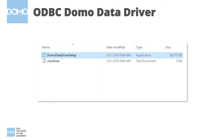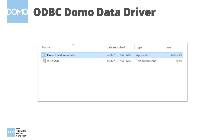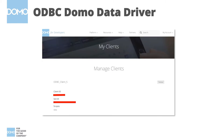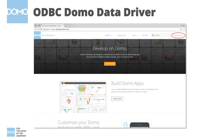Once you've received instructions on how to download the Domo Data Driver, open the Domo Data Driver setup file to begin installation. After installation, in order to connect to Domo using the Data Driver, you'll need your assigned client ID and secret, which you can find at developer.domo.com under My Account.